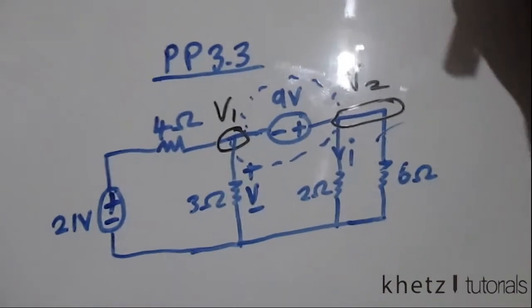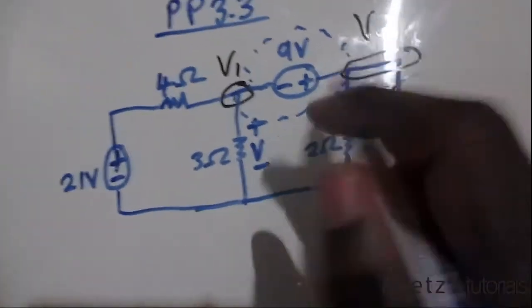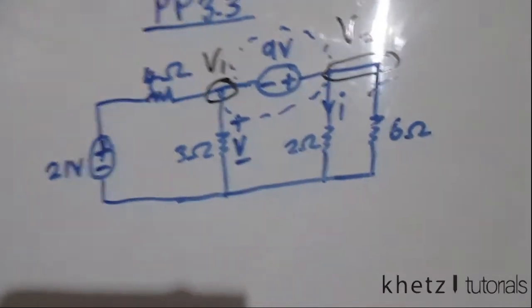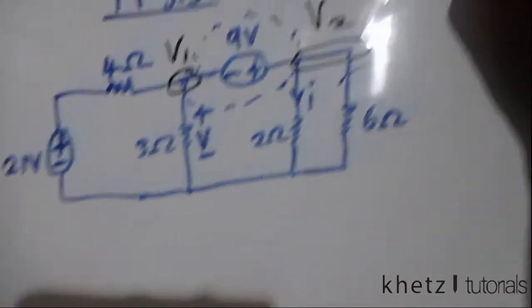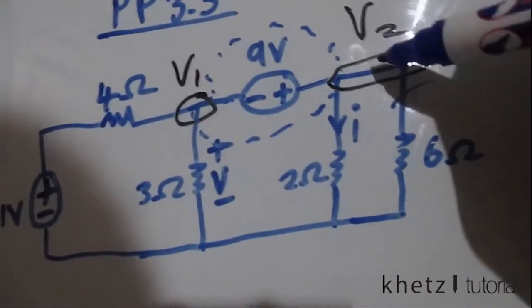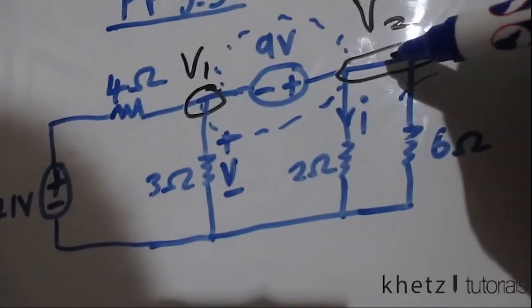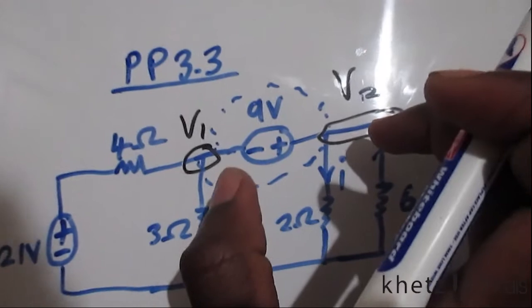Instead of having two equations for the separate nodes, this whole thing becomes one node. That is basically what a super node is. Here's how we treat super nodes: you look at which node is on the positive terminal of the voltage source. It's v2, so between these two nodes we have 9 volts.